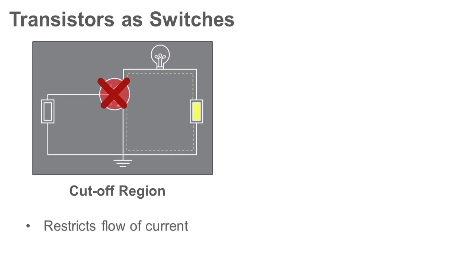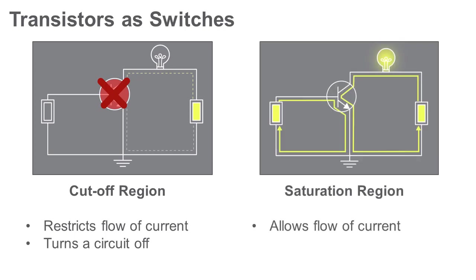Operating in the cutoff region restricts the flow of current and this will turn a circuit off. Operating in the saturation region allows the flow of current, which turns a circuit on. Switching between the cutoff and saturation regions has the same effect as moving between the open and closed positions of a light switch to turn a ceiling lamp on or off.